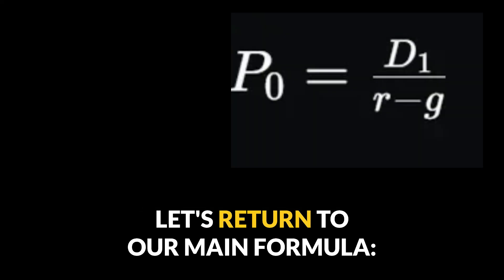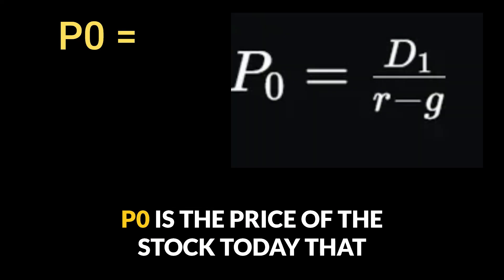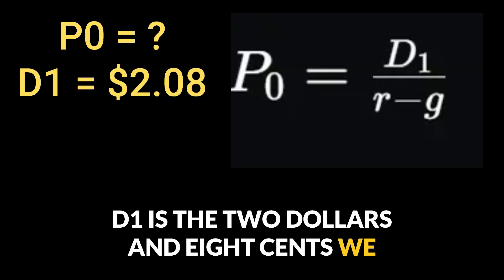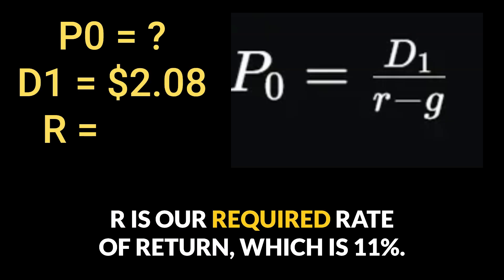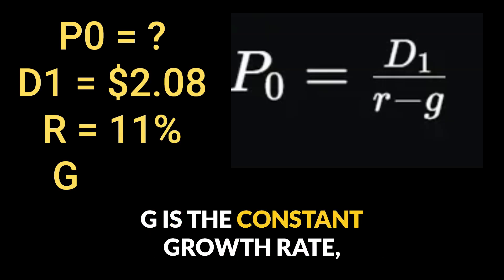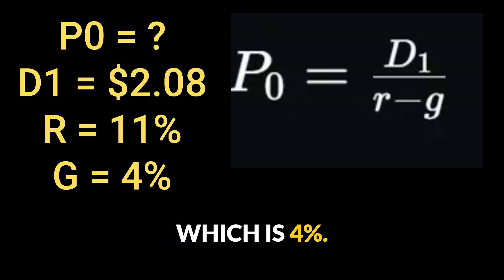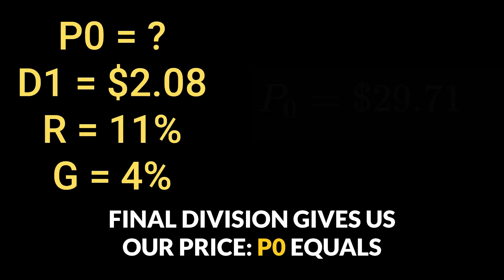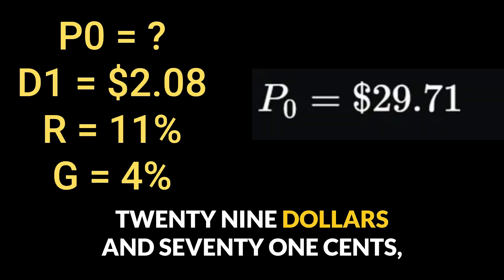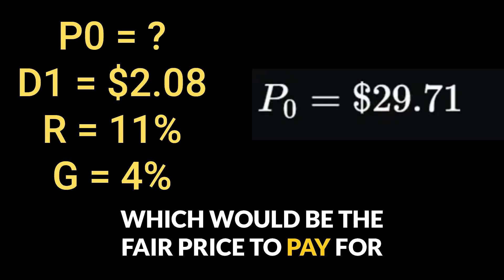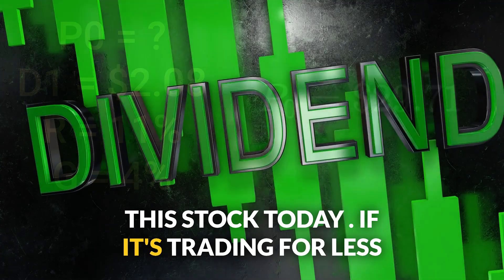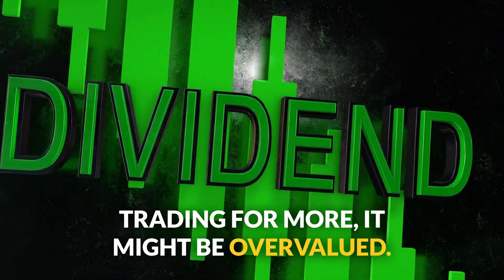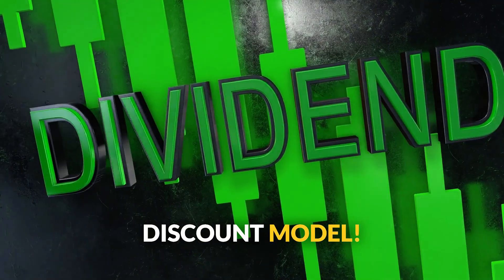Now we can solve for the price. Let's return to our main formula. P0 is the price of the stock today that we're trying to find. D1 is the two dollars and eight cents we just calculated. R is our required rate of return, which is 11%. G is the constant growth rate, which is 4%. Now we plug everything in, and the final division gives us our price: P0 equals $29.71, which is the fair price to pay for this stock today. If it's trading for less than that, it might be a good buy, and if it's trading for more, it might be overvalued. And that's how you use the dividend discount model.